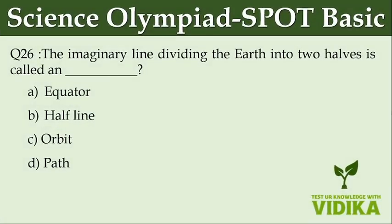The imaginary line dividing the Earth into two halves is called dash. Option A: equator. Option B: half line. Option C: orbit. Option D: path.